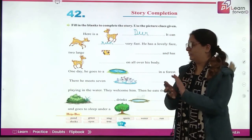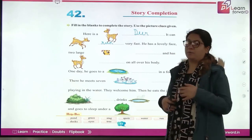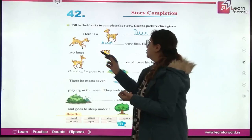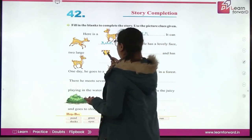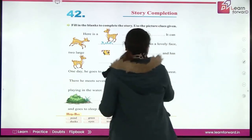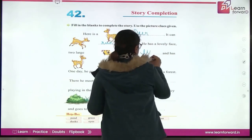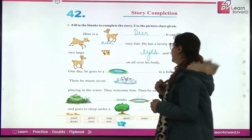Very good. He has a lovely face. It has a lovely face. Two large dash - what is it? What do you see here? Eyes. Very good. So here we write E-Y-E-S. Eyes.